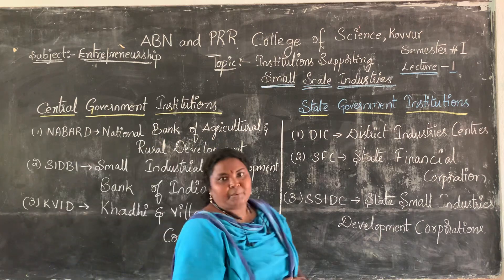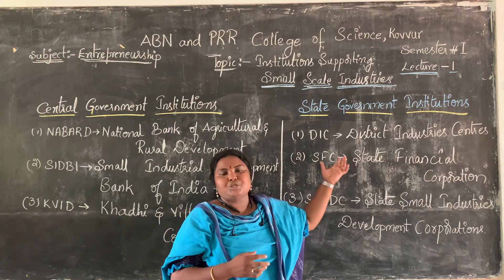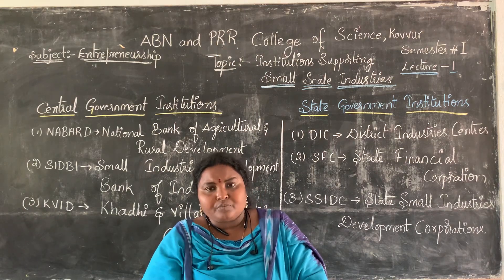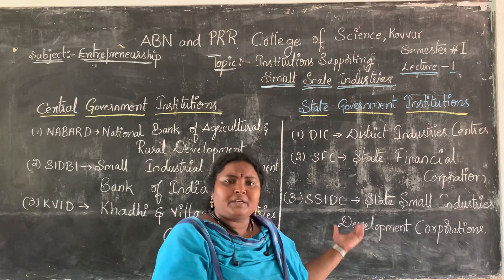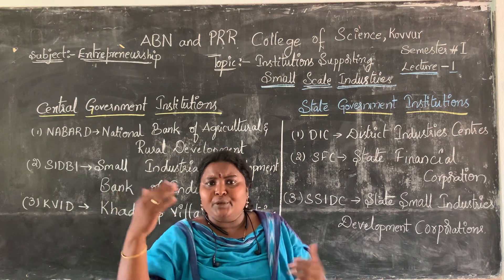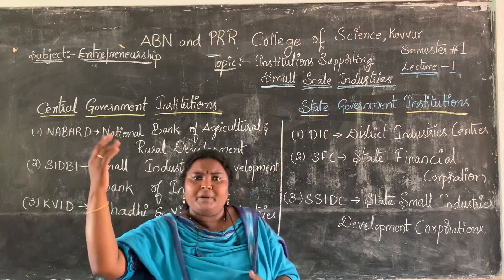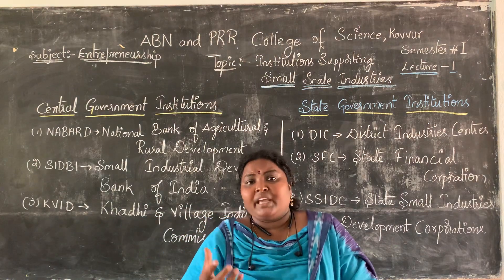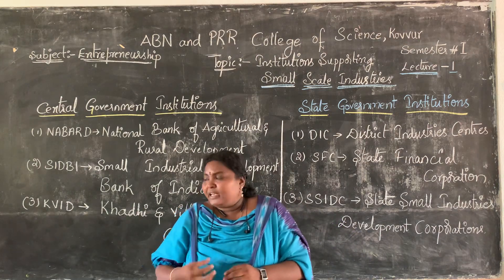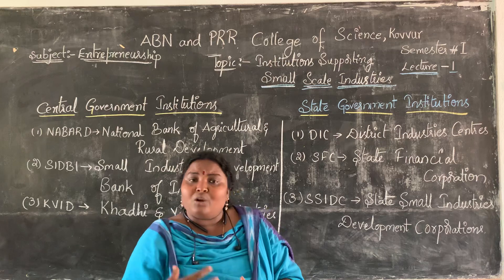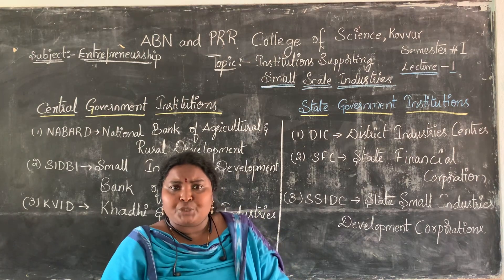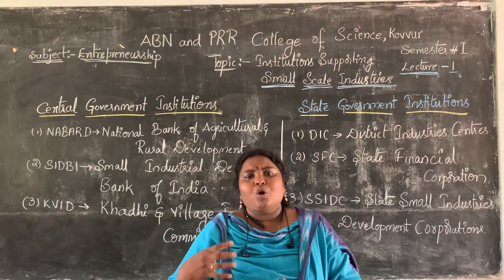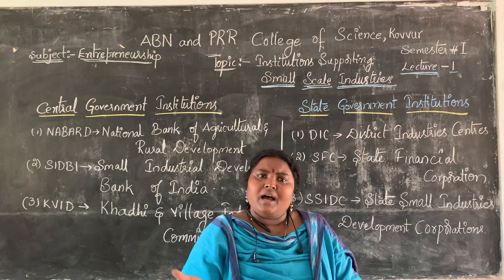So to summarize: central government institutes and state government institutes are the two categories of institutions supporting small scale industries.